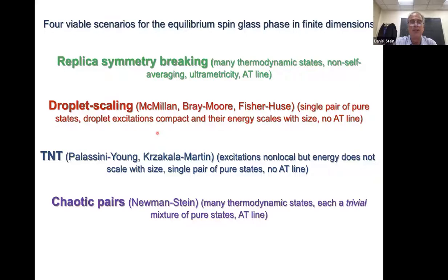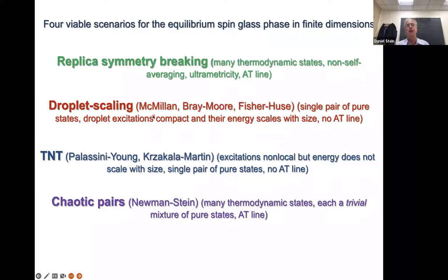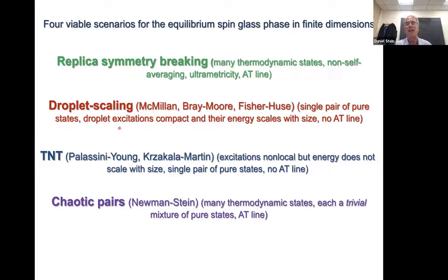I've already discussed replica symmetry breaking, where you have many thermodynamic states, each an uncountable infinity of pure states. The most well-known alternative is the so-called droplet-scaling picture introduced in the mid-eighties by Bill McMillan, Alan Bray and Mike Moore, and Daniel Fisher and David Huse. This is a very different picture from RSB. In droplet scaling, you only have a single pair of pure states — a single mixed Gibbs state living on a single pair of pure states, like the ferromagnet, but with important differences.